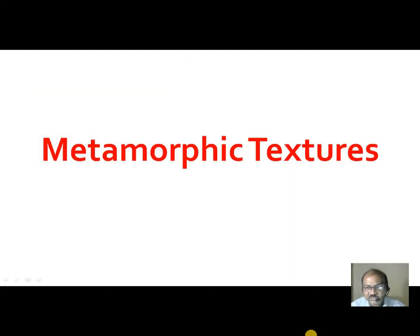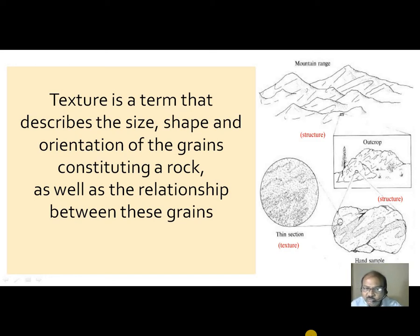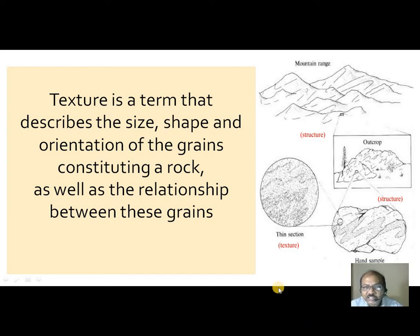Coming to textures. Texture is a term that describes the size of the mineral, shape of the mineral, and orientation of the mineral grain, and how they constitute a rock and their relationship with other grains. That is called texture. So, texture is a small-scale feature which can be seen or studied best under a petrological microscope with the help of a thin section.